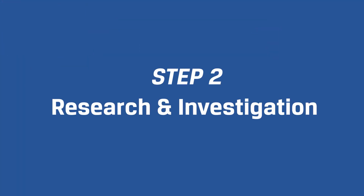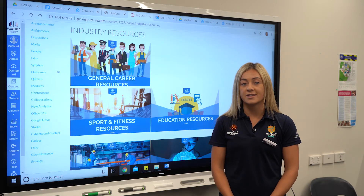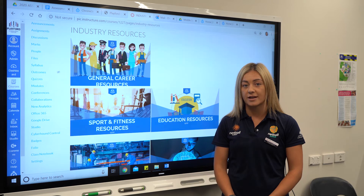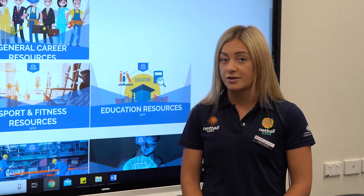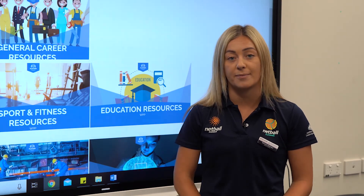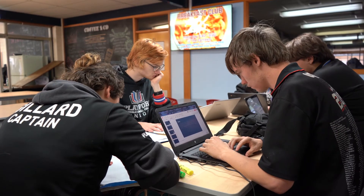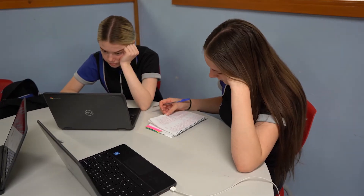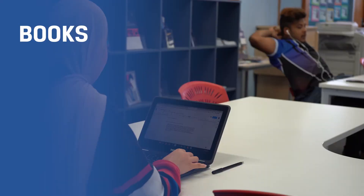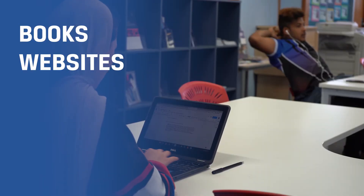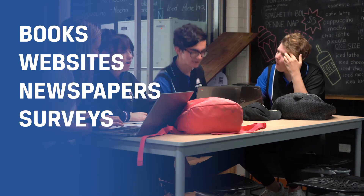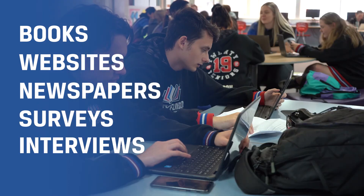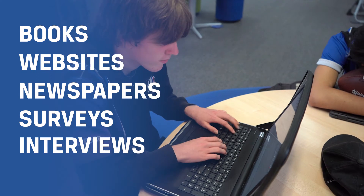Step two is research and investigation. This step requires you to conduct research based on the practical activity you are aiming to complete. This research will need to be referred to constantly throughout your assignment. You should use both primary and secondary sources, which can include books, websites, newspaper articles, surveys, and it should definitely include at least one interview with an expert in your industry.